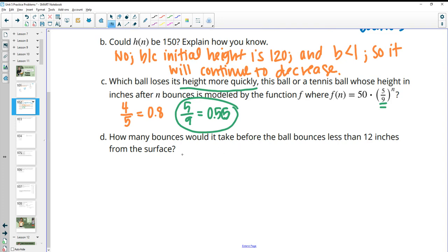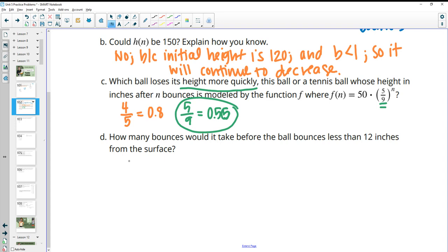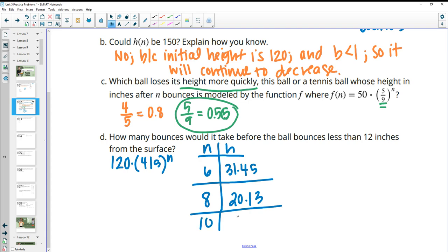How many bounces would it take for the ball to be less than 12 inches from the surface? So you can start just plugging some random numbers in if you wanted to. You could create a table to kind of see. Remember, we're using the 120 times 4/5 to the N equation. And so if you just started plugging in some numbers here for N and figuring out what that height is, like if we plugged in 6, we would get 31.45. So that's still over the 12. You could plug in 8 and get like 20.13. So we're getting closer here, right? So you could plug in 10 and that's 12.88.